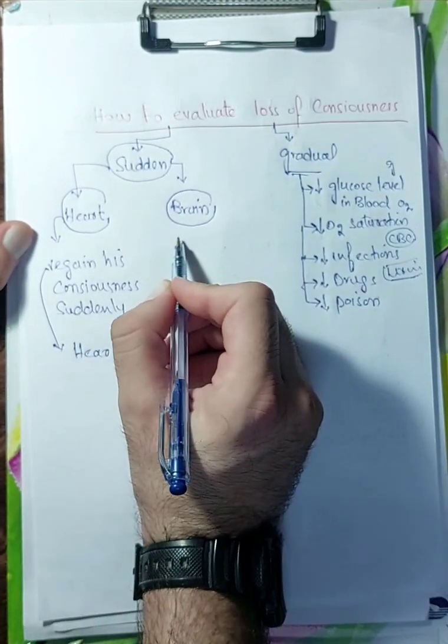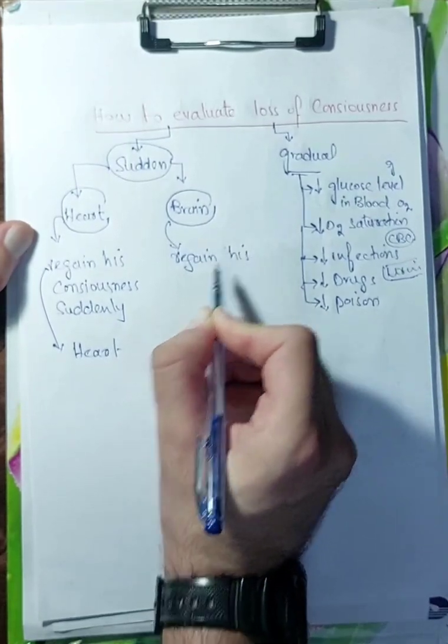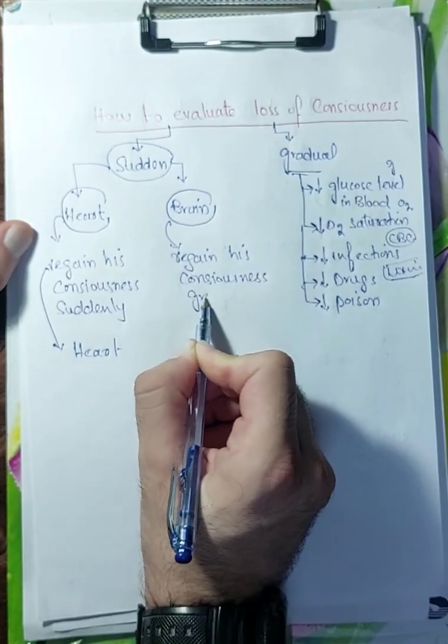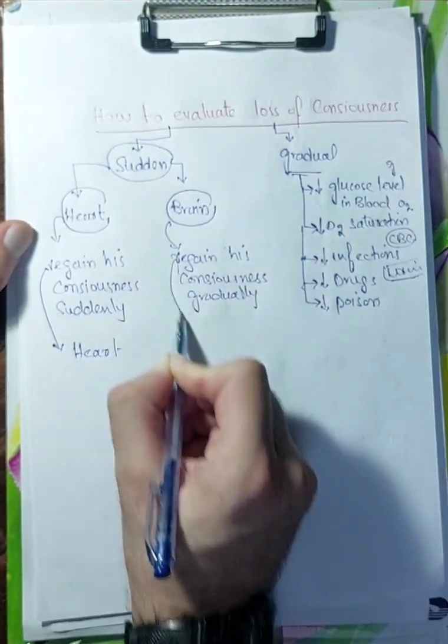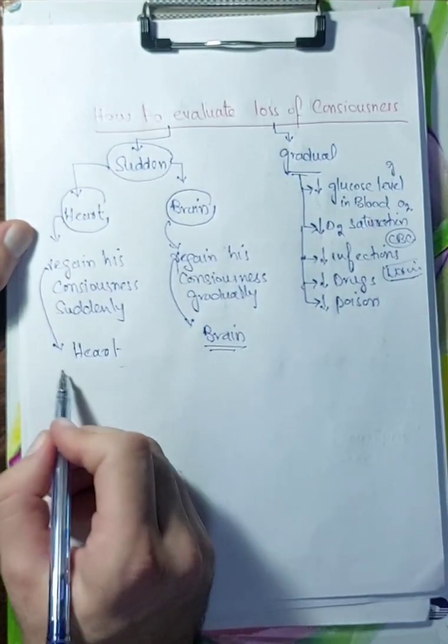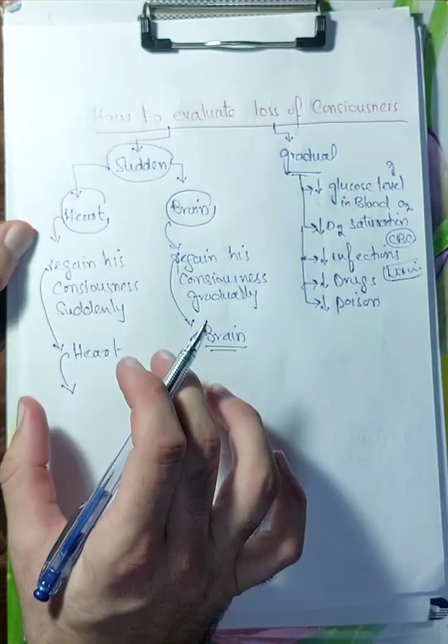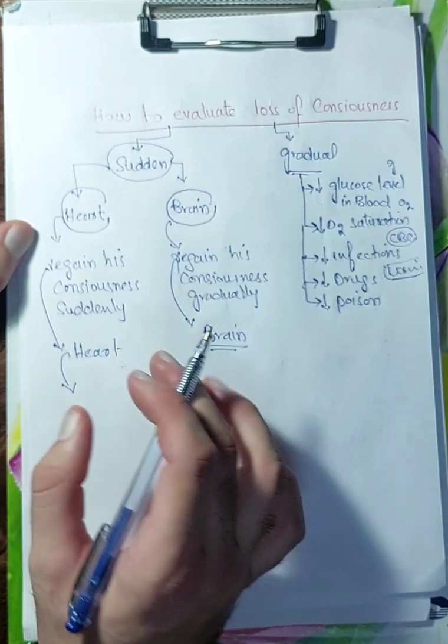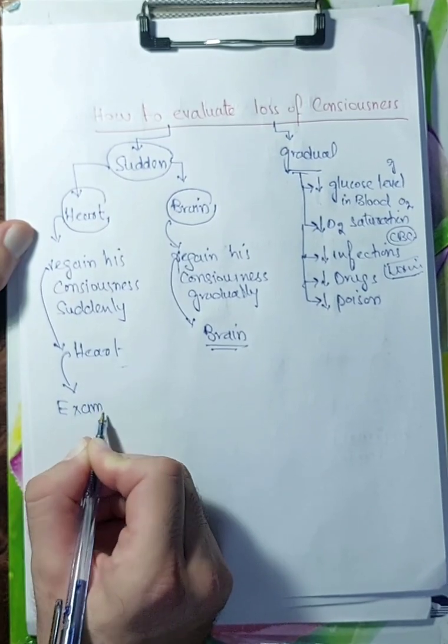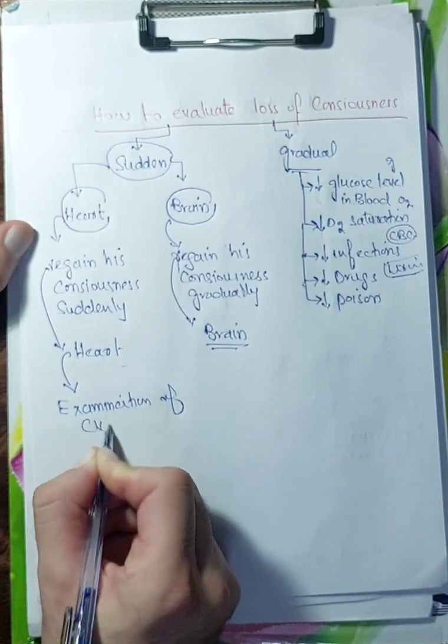But if he regained his consciousness gradually, the pathology will be in the brain. Now we are focusing on the heart. After you know that the pathology is in the heart, you will examine the patient for cardiovascular examination of CVS.